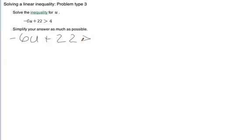So in your math notebook, of course, you'll want to write down the problem. And we are solving for u. So like usual, we want to get the variable term all by itself. So we're going to have to subtract 22 from both sides.